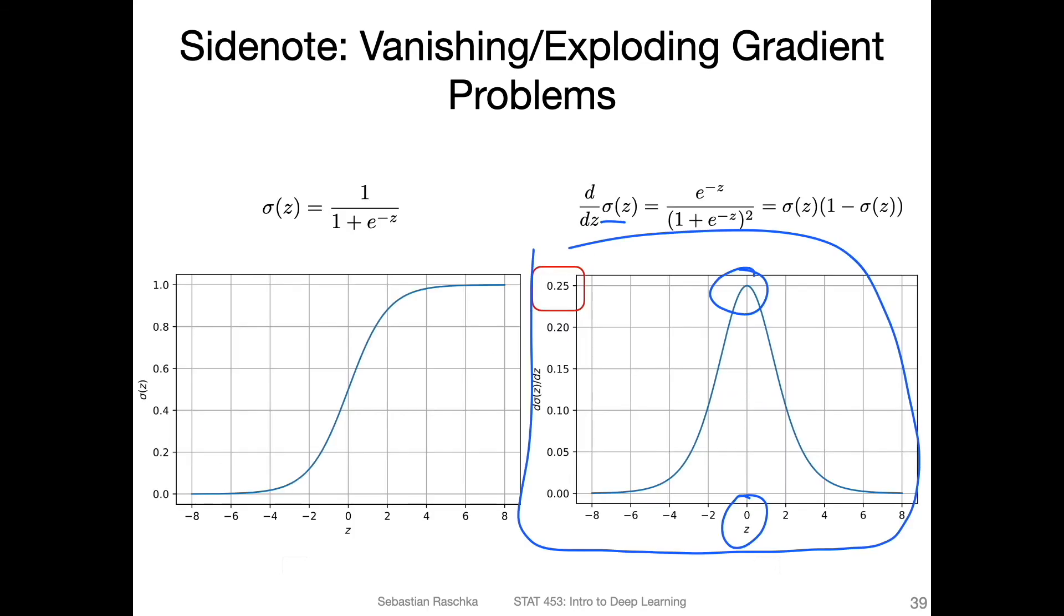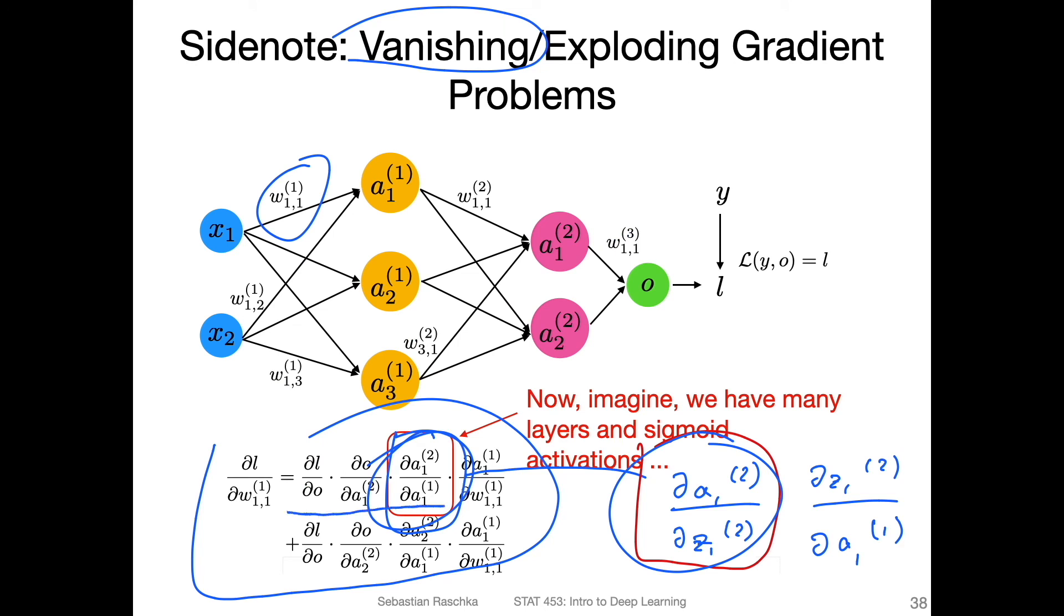If I go back one more time, we have all these other terms here. The term here, here, and here, it's all multiplied with this one. So if this is small, then we degrade the whole update, the whole gradient here. And this is only for two layers. If we have more layers, we have more of these terms in there if we use the logistic sigmoid.